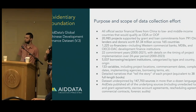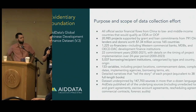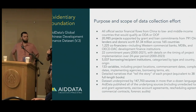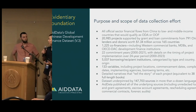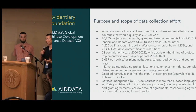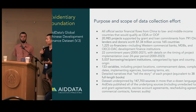At AidData, we spent years pulling together a comparable dataset for non-traditional donor countries. One of the huge launches we had last year was the Global Chinese Development Finance dataset, version 3.0. Later in the presentation, we'll be showing our gratitude for how the OpenStreetMap community has been beneficial to this work. But first, I want to give a little background on the information we have.